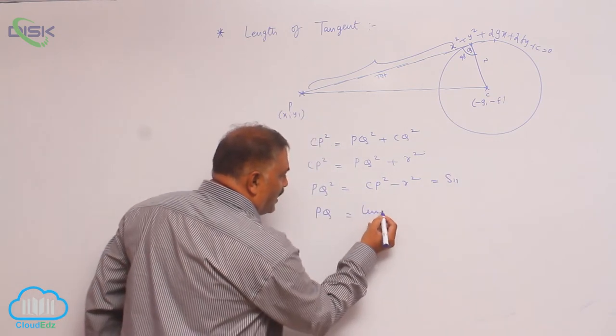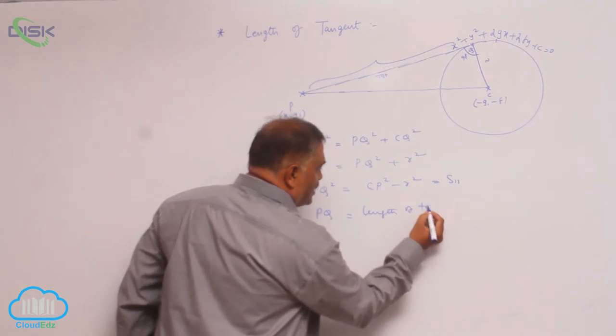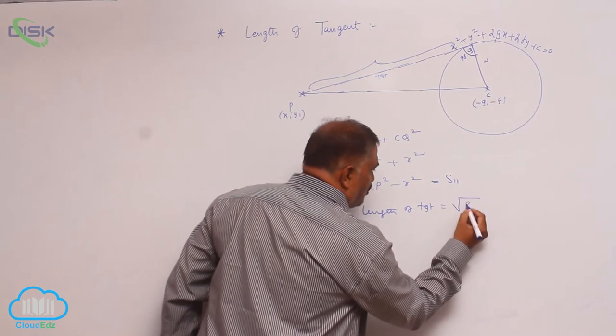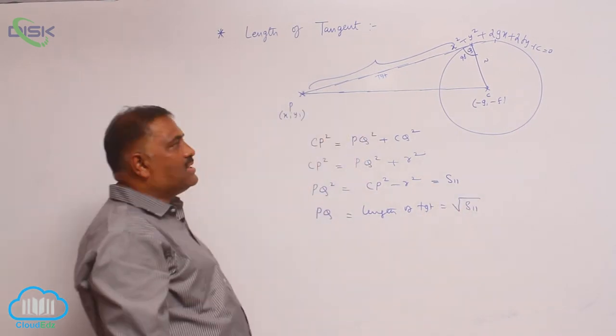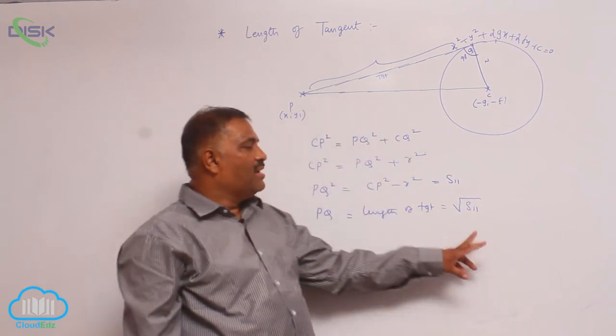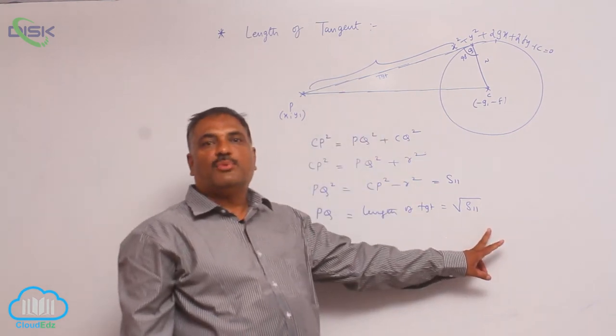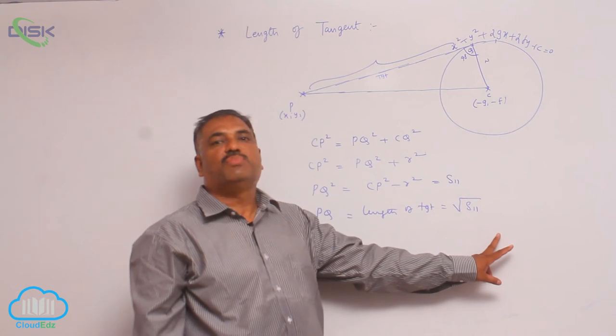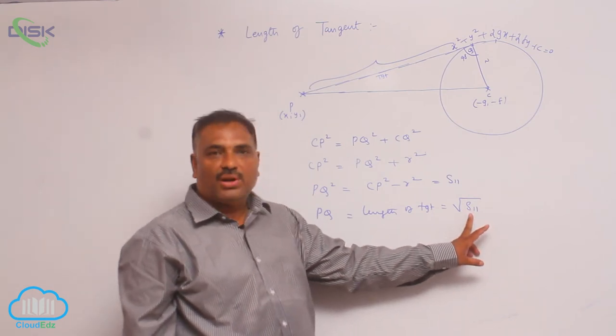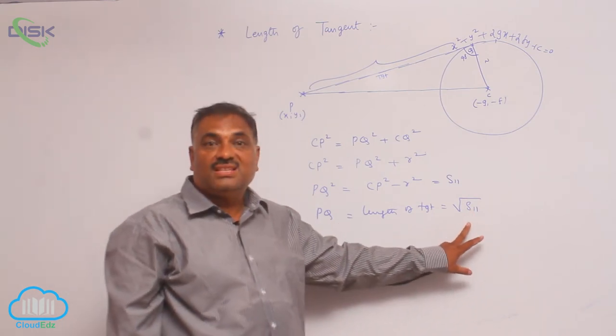PQ is equal to length of tangent, that is nothing but root of S1-1. Since point lies outside, as you know that position of the point outside the circle is always positive, so S1-1 positive root S1-1 is defined.